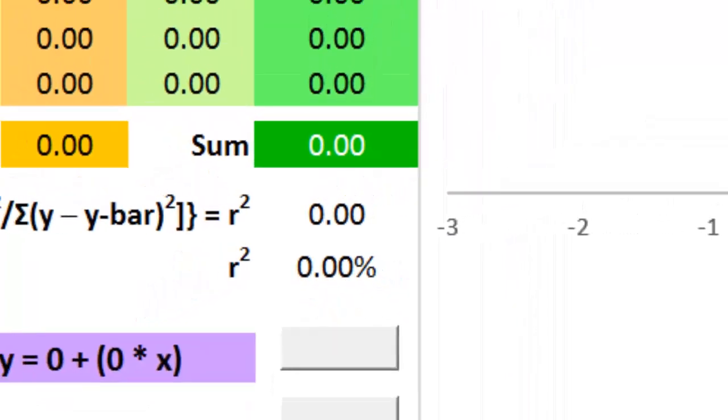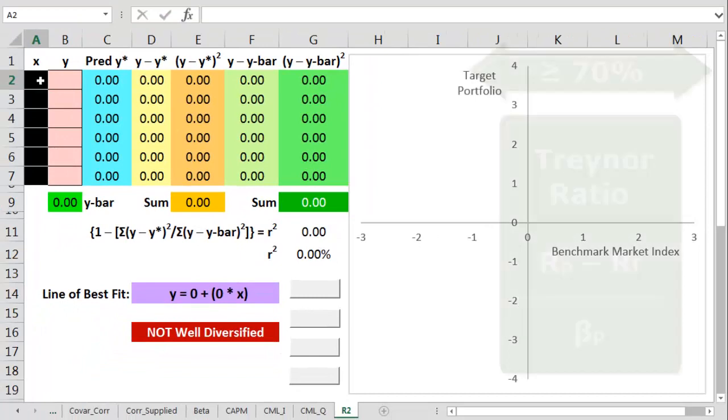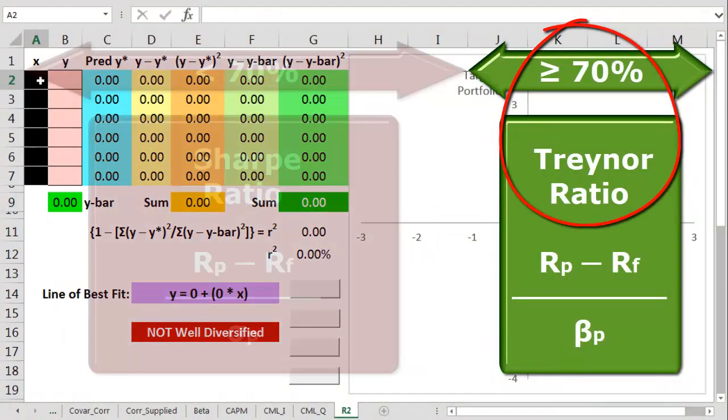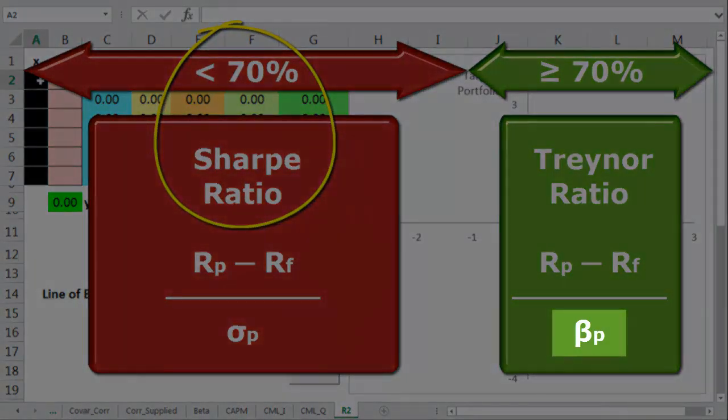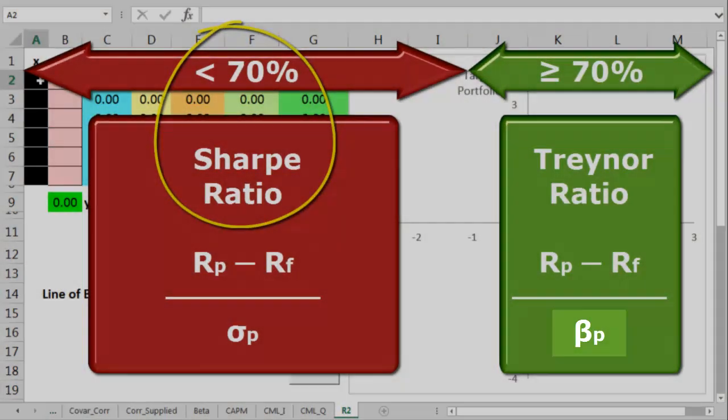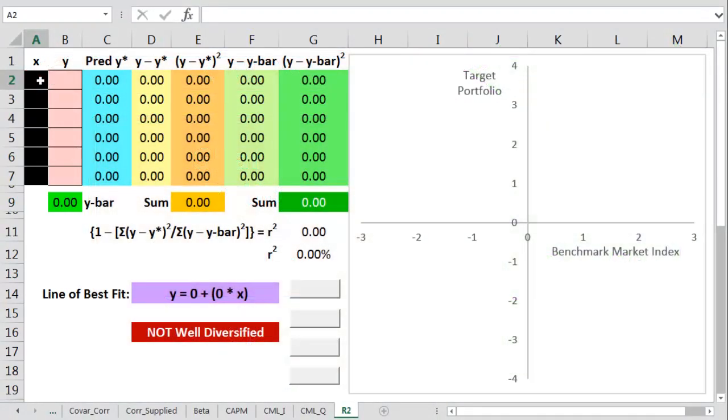If it is, it's generally a good thing to use its beta rating in something like a Treynor ratio. If, however, we get an R-squared figure of less than 70%, a portfolio's beta measure of systematic risk may be too unreliable to use anywhere else. Fortunately,